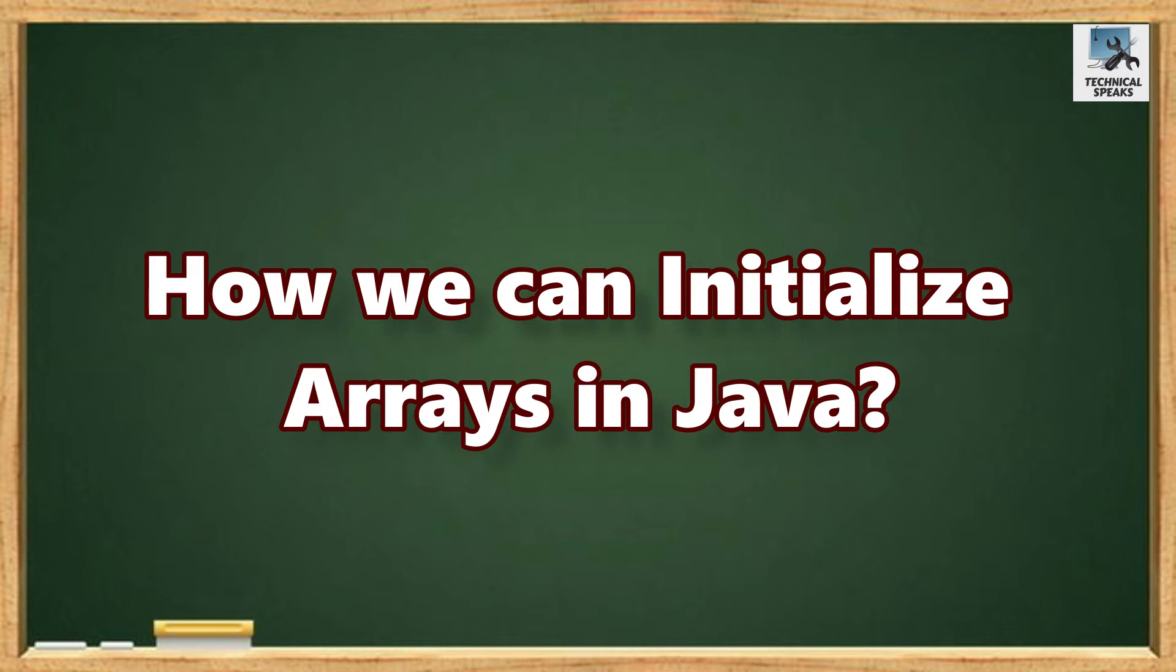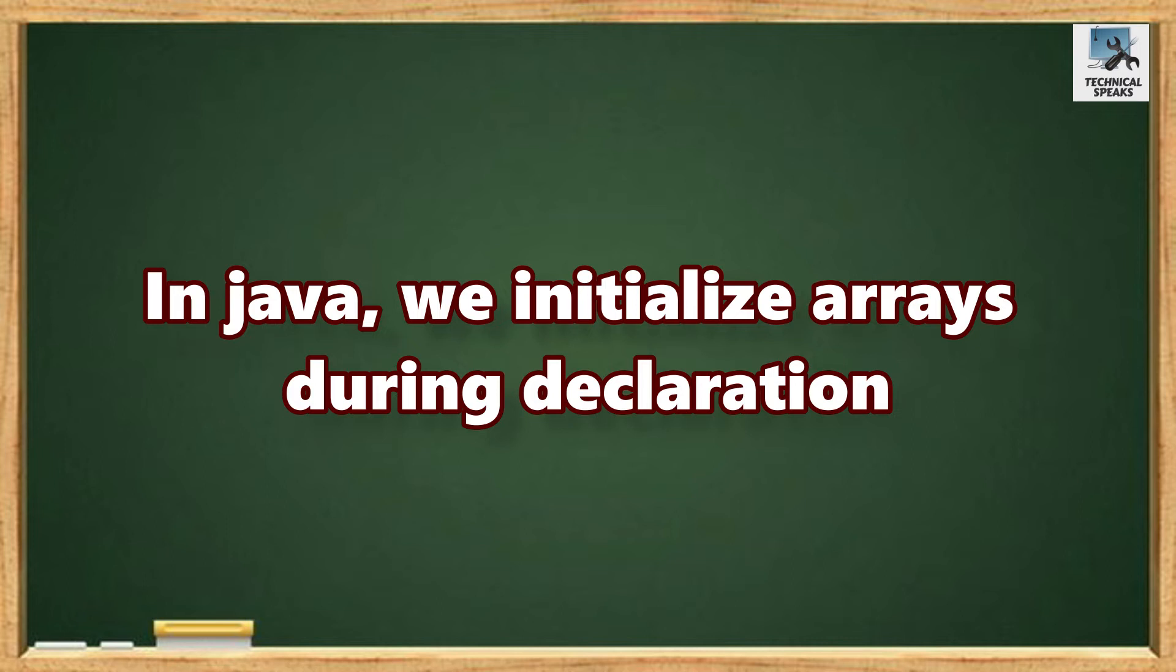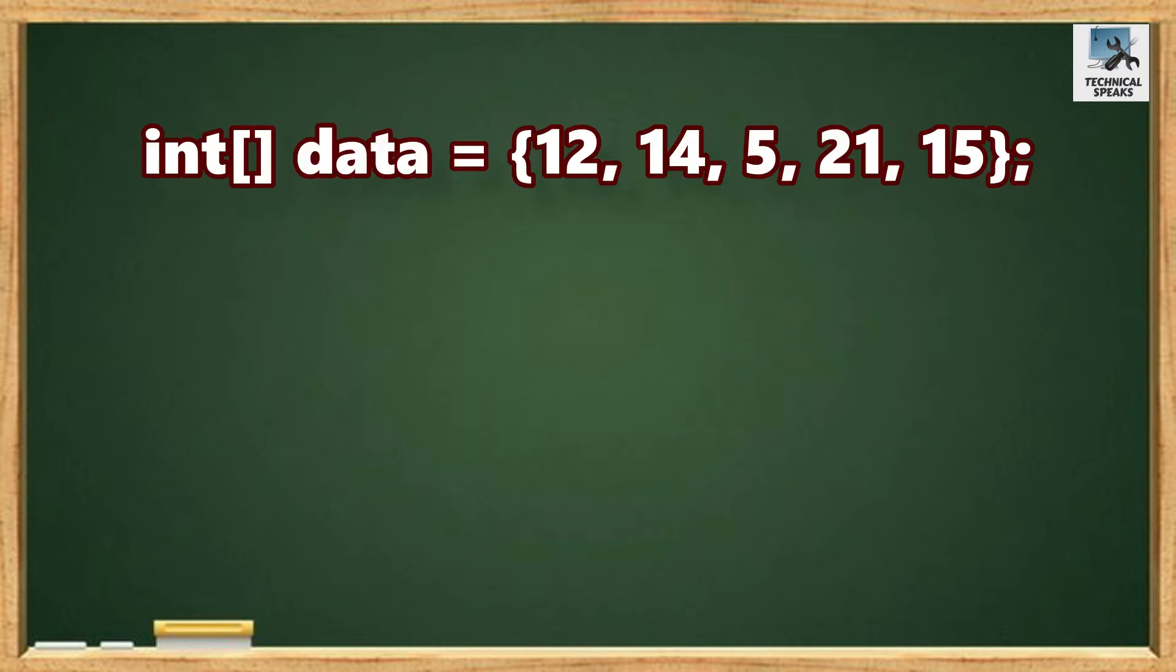Now, the next topic is how we can initialize arrays in Java. In Java, we initialize arrays during declaration. For example: int data equals {12, 14, 5, 21, 15}. Here we have an array named data, and we initialize it with the values inside the curly braces. A very important point is